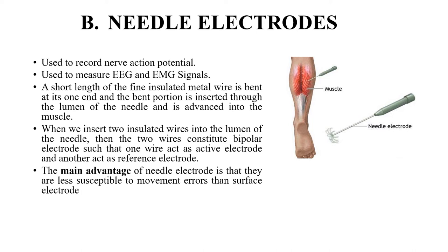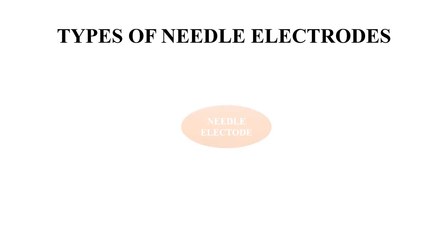When two insulated wires are inserted into the lumen of the needle, the two wires constitute bipolar electrodes. One wire acts as the active electrode and another acts as the reference electrode. The main advantage of the needle electrode is that it is less susceptible to movement errors than the surface electrode.